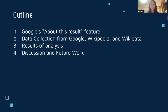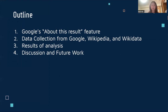The presentation is composed of four parts. First, I will briefly introduce Google's About This Results feature. Then I will discuss our data collection process that starts with auditing search results on Google, then extracting links to Wikipedia pages and domain properties from Wikidata. I will then share the results of our analysis and finally discuss what our research means for future work.